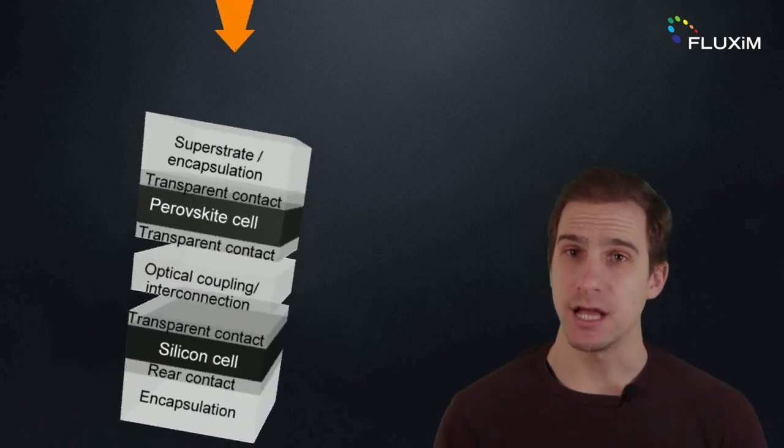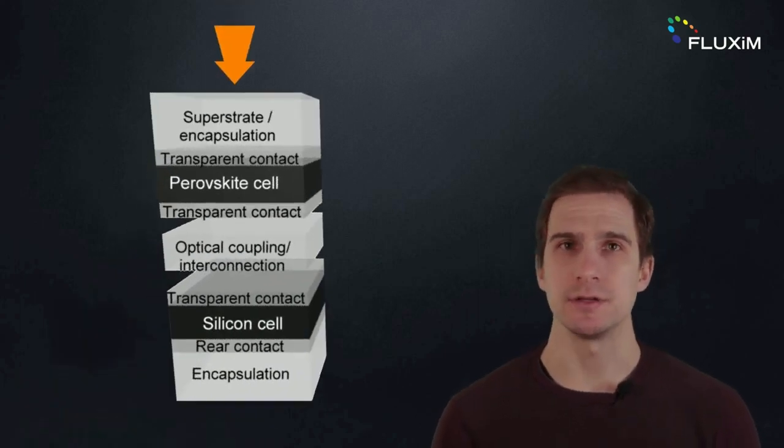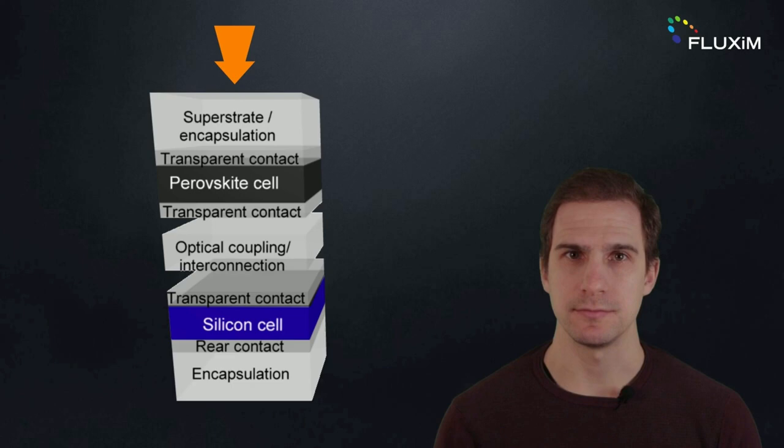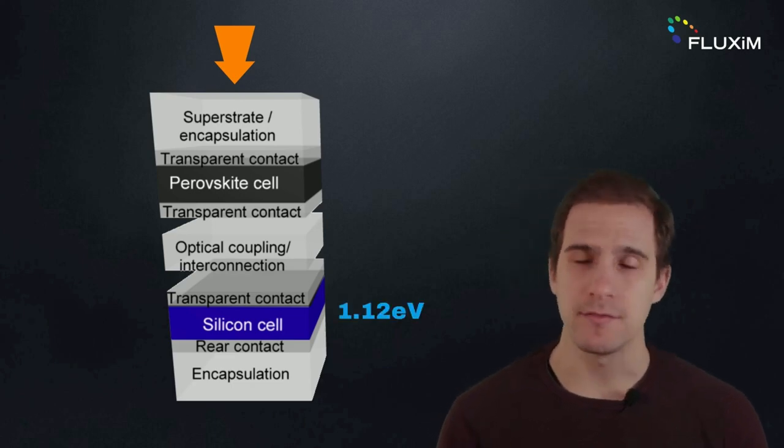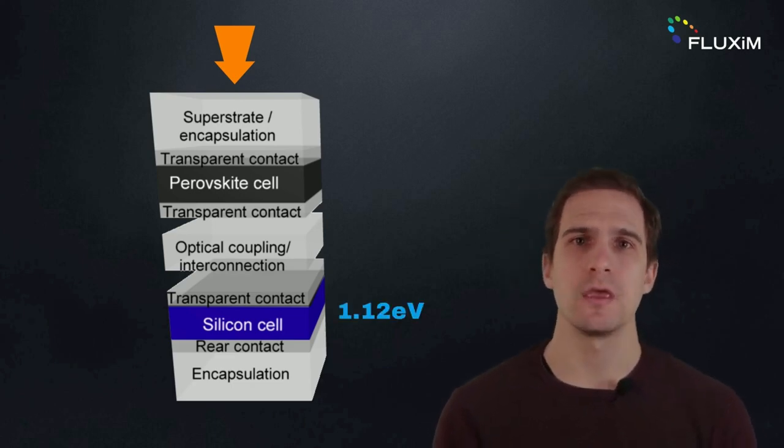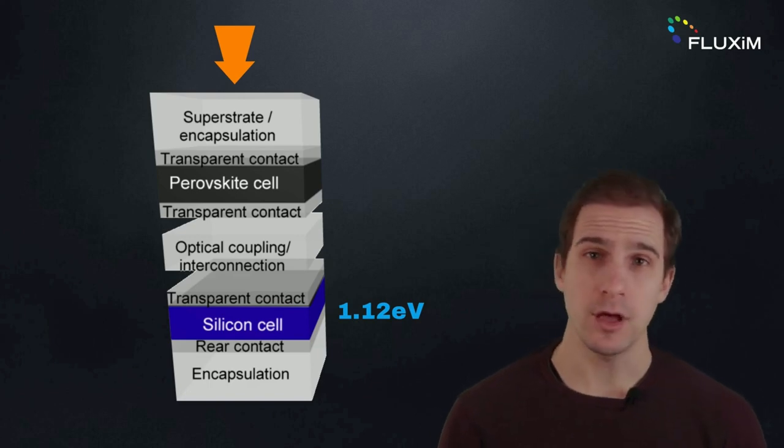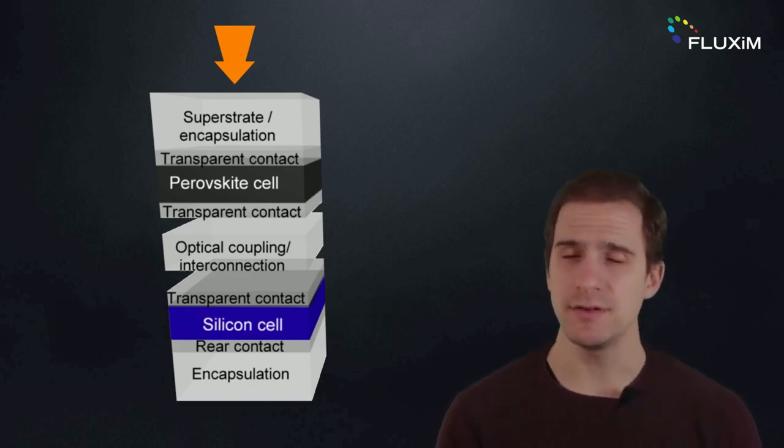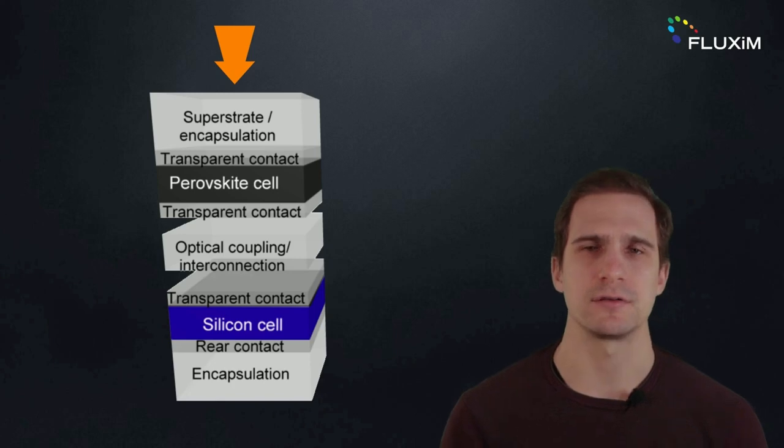The most widely studied tandem solar cells are silicon perovskite, where silicon is the bottom subcell. Silicon has a bandgap of 1.12 eV, so to maximize the efficiency, the ideal bandgap of the top cell should be between 1.67 and 1.75 eV.